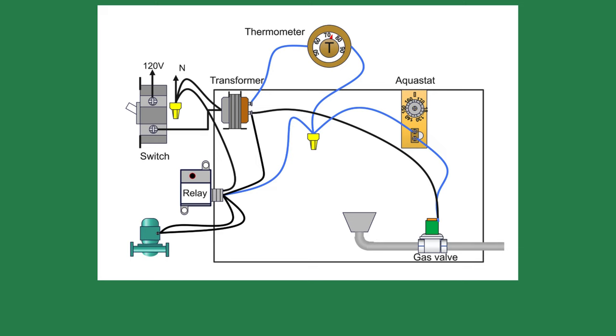A gray relay is attached to the boiler, and two of the wires go to the circulator. The red light is not lit on the relay. What's the first thing you do?